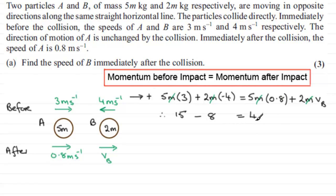So if we do 15 take 8, well that's 7, and then if we subtract 4 from both sides, we therefore have 3. So we've got 3 equals 2vB. If we divide both sides by 2, then vB is equal to 3 over 2, or 1.5.